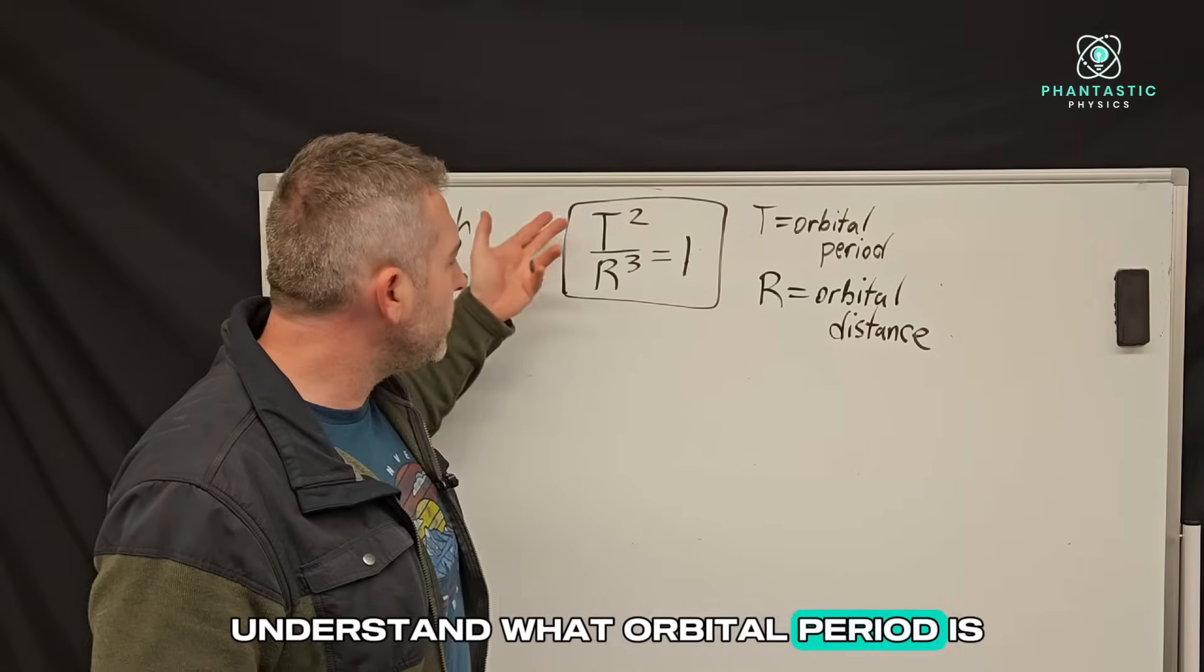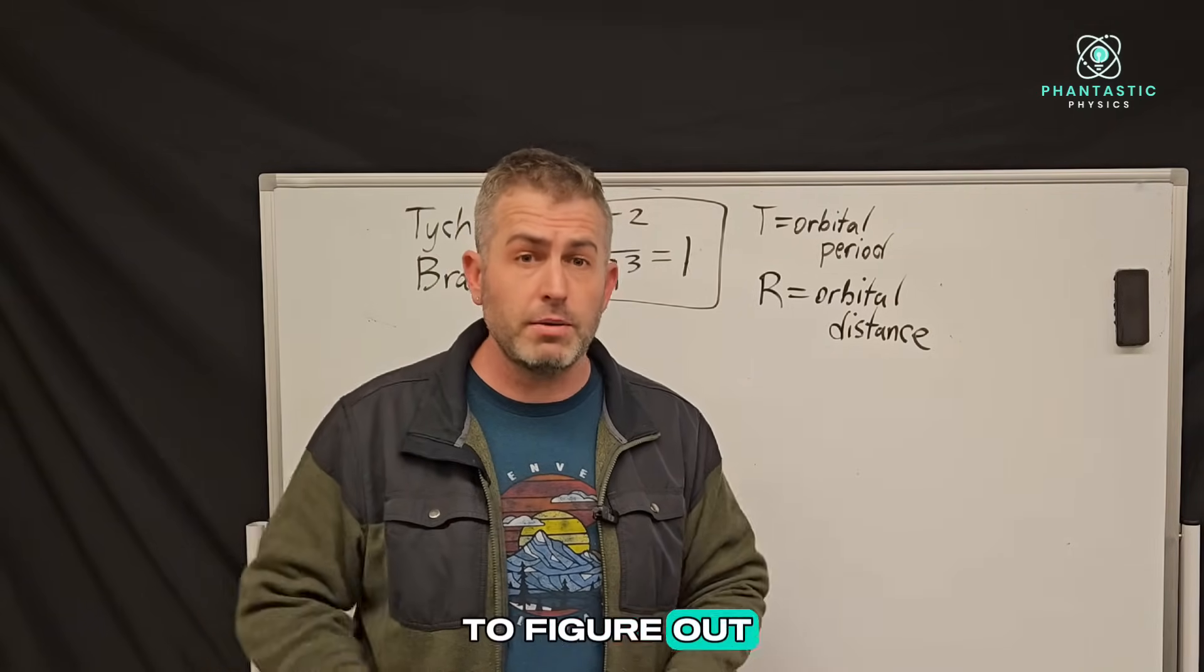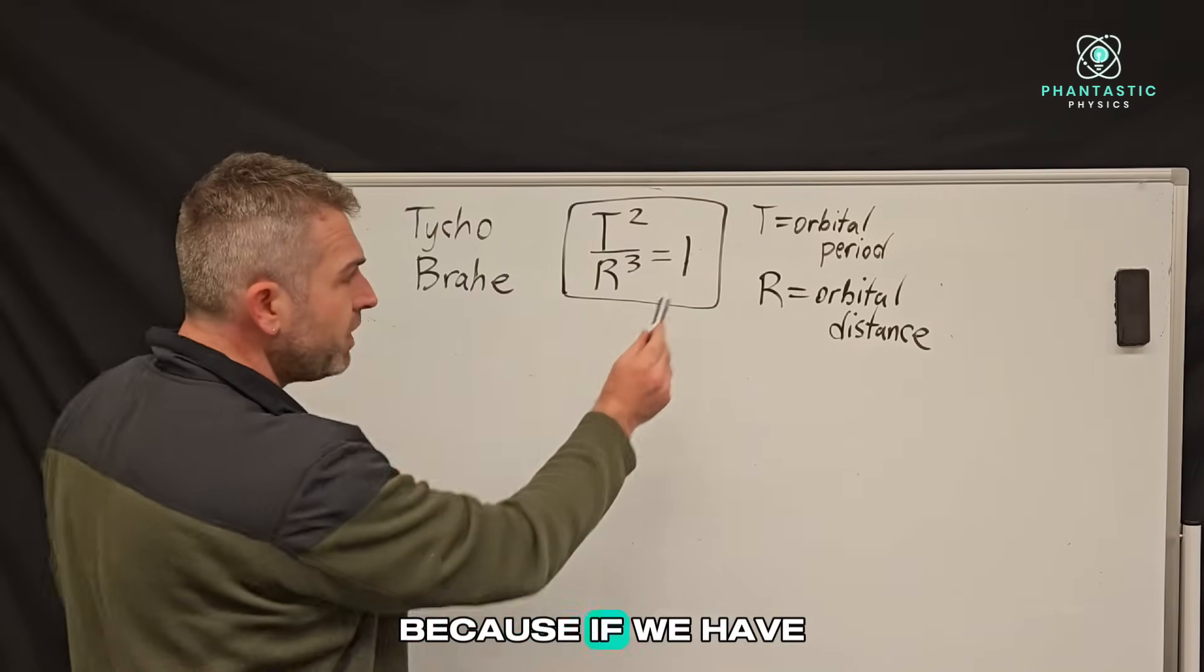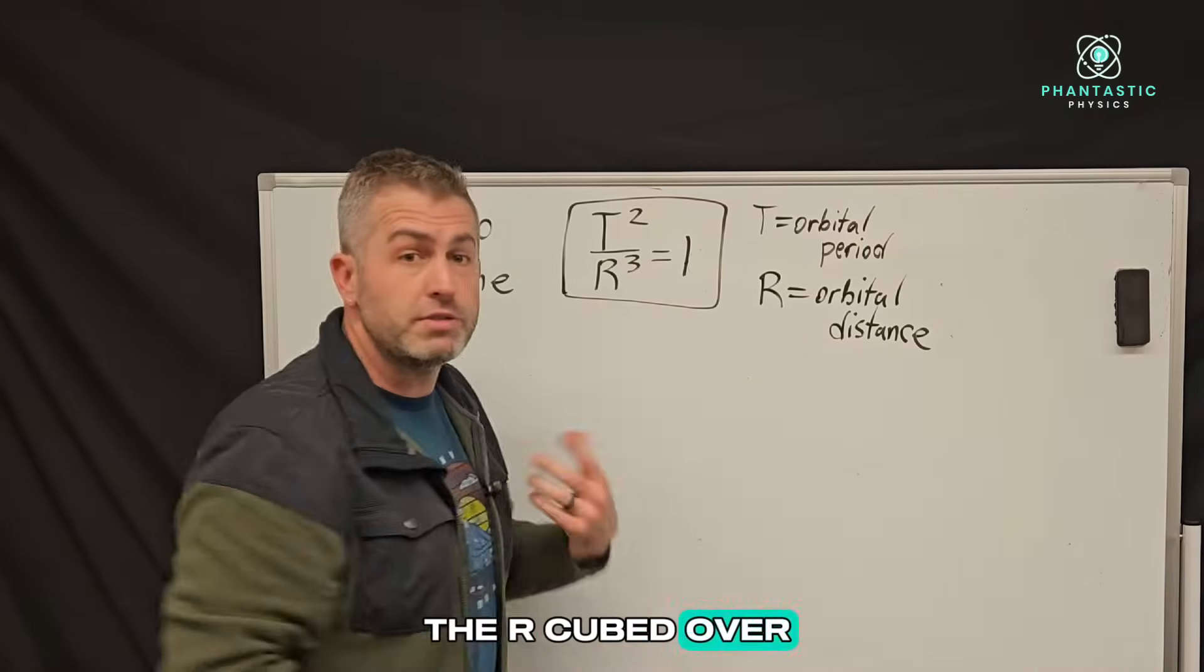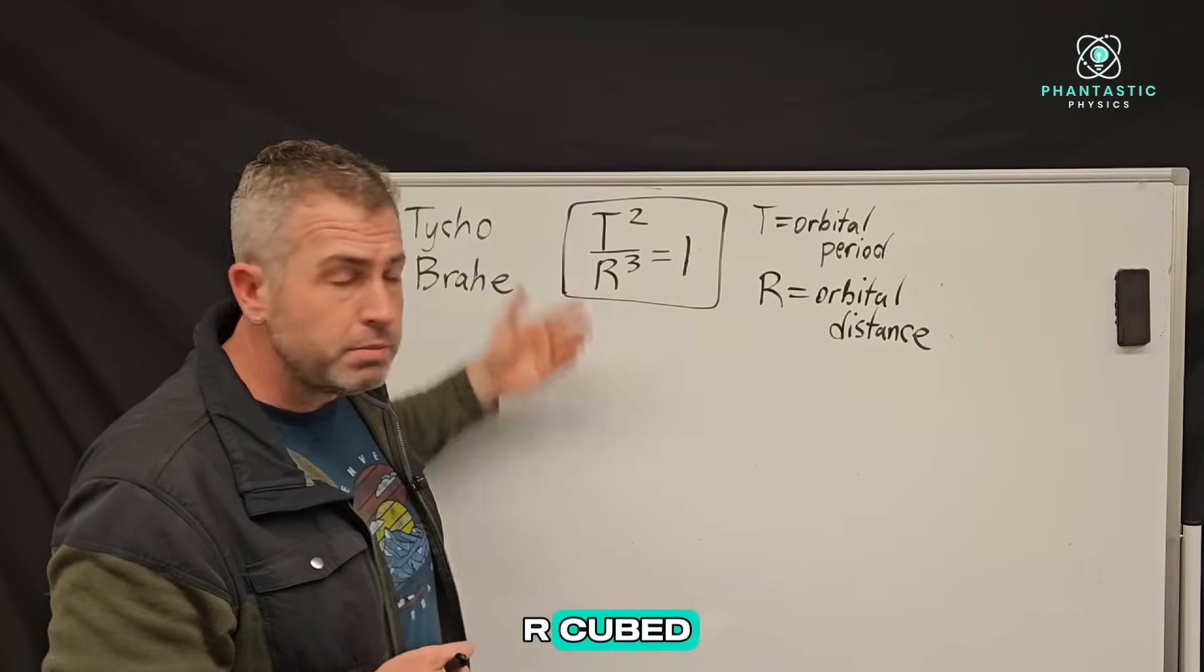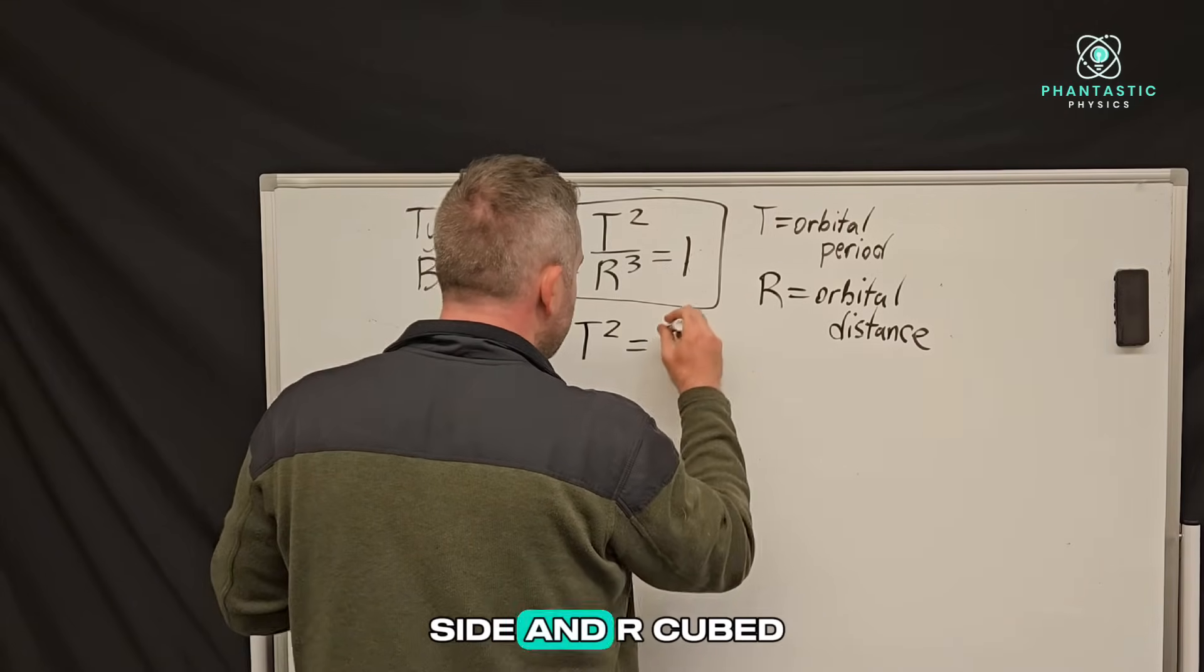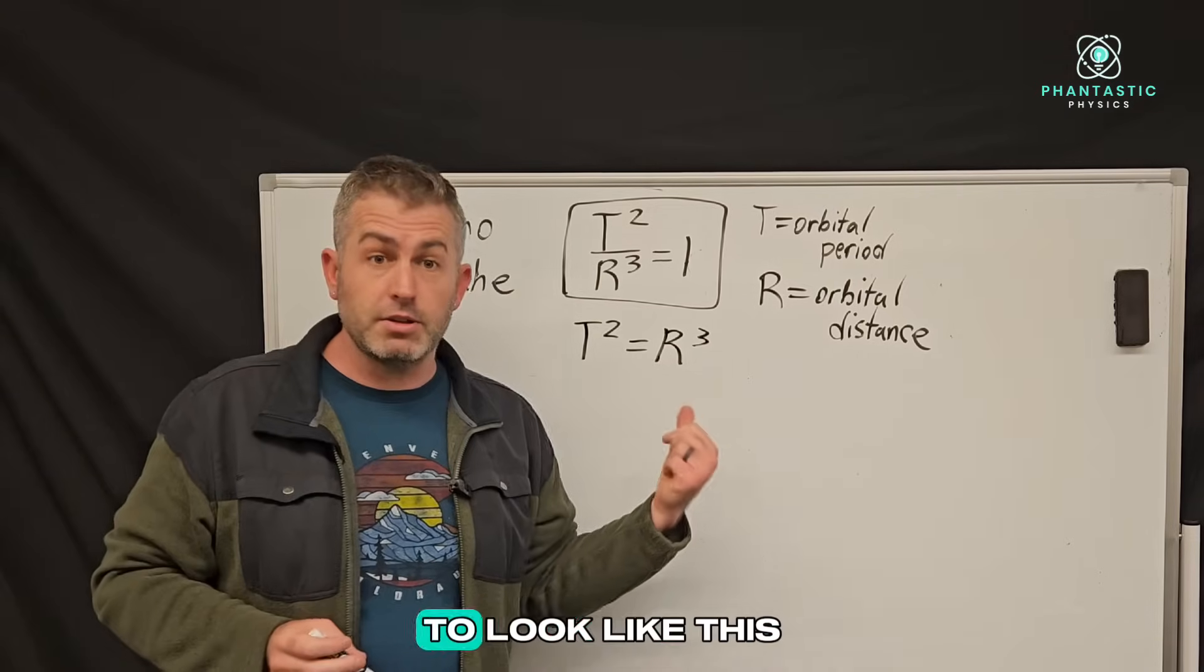Now that we understand what orbital period is and what orbital distance is, I think we're ready to use this equation to figure out how far away is planet Mars from the sun. Let's start by rearranging this equation slightly. Because if we have a one on this side, mathematically, we could just bring the R cubed over to the other side. So it would cancel on the left, you'd end with T squared on this side and R cubed on this side. So I'm just rewriting the equation slightly to look like this.